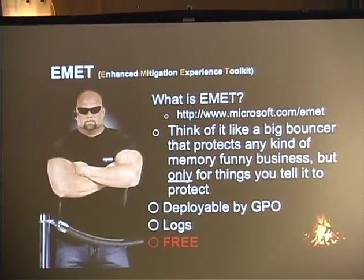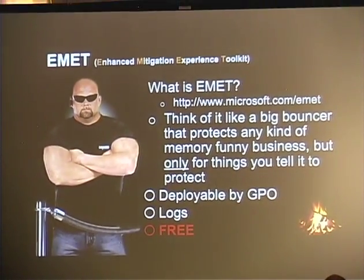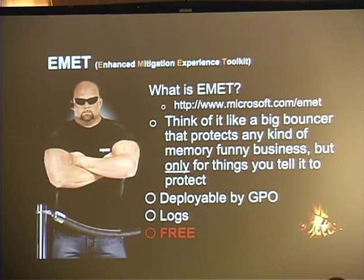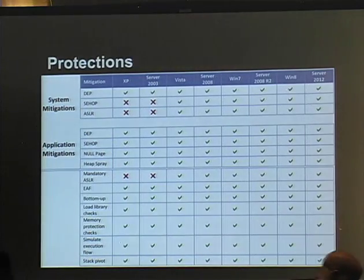First off is EMET. If you don't know what EMET is, it's a free Microsoft tool that almost every enterprise should be using right now. It's opt-in and it forces security onto applications that are most at risk, or whatever you configure it for. It's deployable by GPO and it basically makes a ton of these protections available — stopping anything from zero-days to old exploits. It's free, so why aren't more organizations doing this? It's a little bit hard to figure out and deploy, but spend some time and just do it.